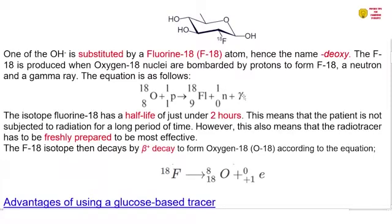Now the isotope fluorine-18 has a half-life of just under two hours, which means that the patient is not subjected to radiation for a long period of time. However, this also means that the radiotracer has to be freshly prepared to be most effective. Otherwise, if you delay, then it's going to decay by the time it gets into the body. So it has to be freshly prepared.